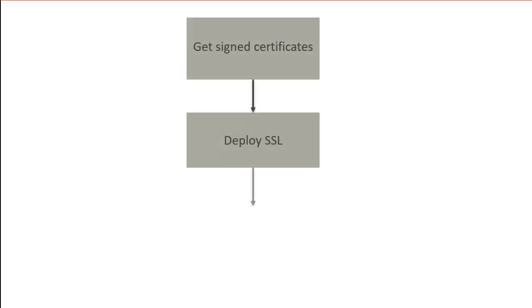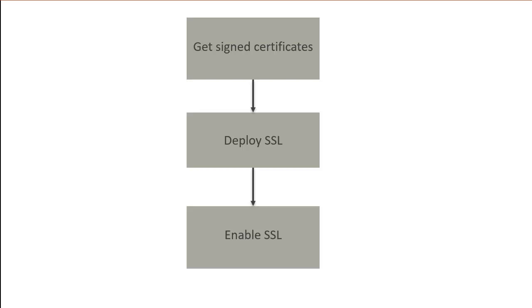To configure SSL in your environment, you must get signed certificates, deploy SSL, and enable SSL. Signed certificates are required for enabling secure communication using SSL protocols. You need to request a signed certificate from a recognized certificate authority, also known as a CA, using a certificate signing request file. The signed certificate also contains your public key. BMC recommends that you replace the existing certificates by bringing your own certificate that is signed by an external recognized CA. For more information on these methods, see the Control-M help.